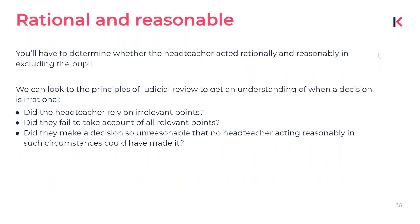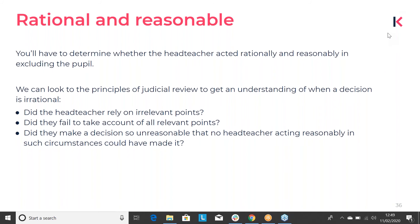When considering whether an exclusion is rational and reasonable, you can look at the principles of judicial review. Ask yourself: did the headteacher rely on a relevant point? Did they fail to take account of all relevant points? Did they make a decision so unreasonable that no headteacher acting reasonably in such circumstances could have made that decision? This is one of the considerations you need to make when deciding whether to uphold the exclusion or reinstate the pupil.